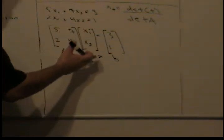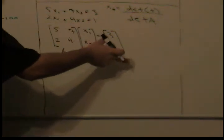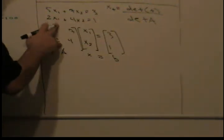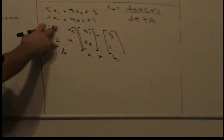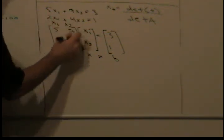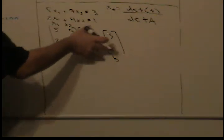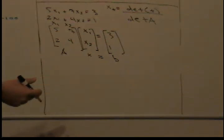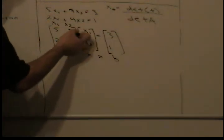So we replace this with our B and we find the determinant, and we put that over the determinant of the original A. First of all, what's the determinant of the original A?